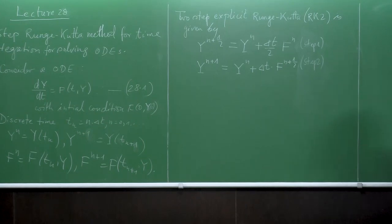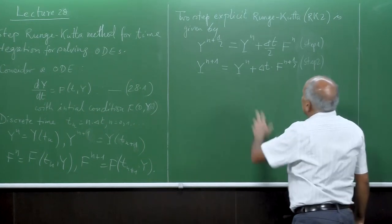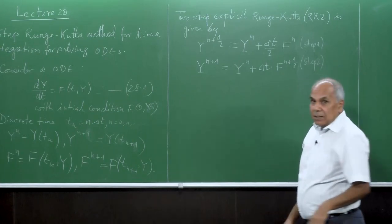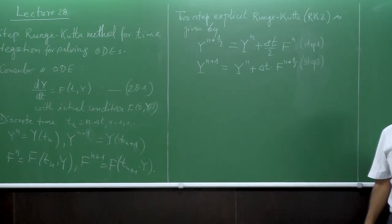So this is the two-step Runge-Kutta method. If you do some Taylor expansion you get that the approximation is order two. I do not go into the detail of that.